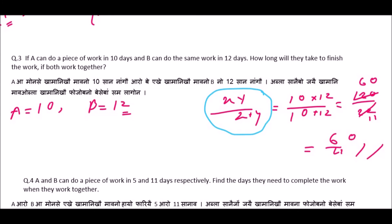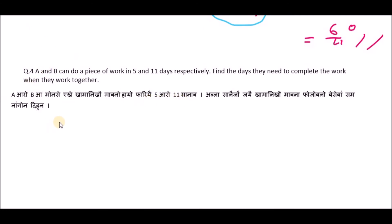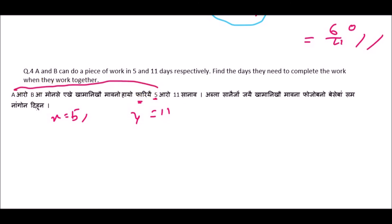Next example: A and B can do a piece of work in 5 and 11 days respectively. Find the days they need to complete the work when they work together. Using the formula x into y divided by x plus y, where x equals 5 and y equals 11.